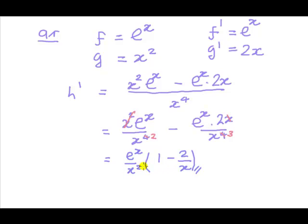And this derivative exists so long as x is not equal to zero, as we stated earlier for the function — it exists so long as x is not equal to zero. So that's using the quotient rule. Let's repeat the process using the product rule and see if it's any easier.